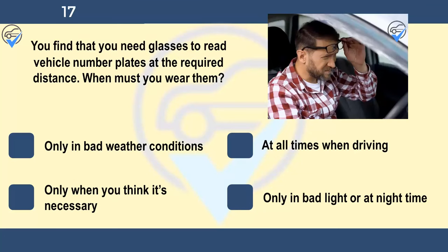You find that you need glasses to read vehicle number plates at the required distance. When must you wear them? Only in bad weather conditions, at all times when driving, only when you think it's necessary, or only in bad light or at night time. Have your eyesight tested before you start your practical training, then throughout your driving life. Have checks periodically as your vision may change.